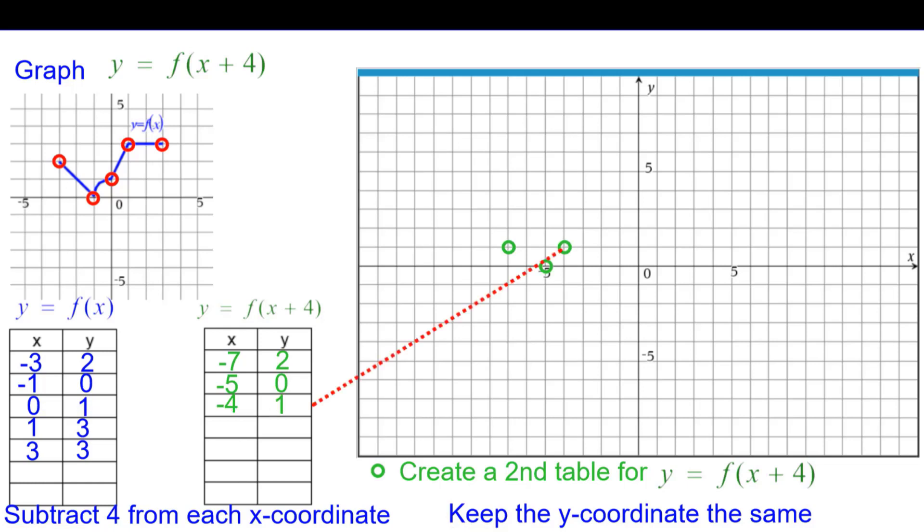1 minus 4 is negative 3. Negative 3, 3. And 3 minus 4 is negative 1 and negative 1 comma 3.